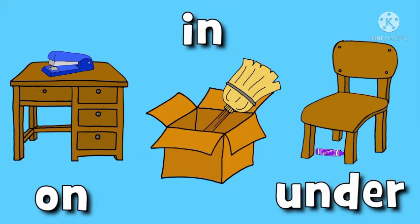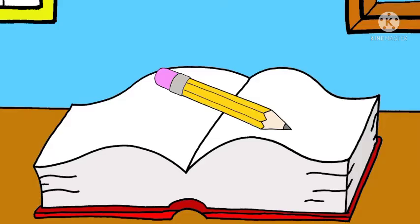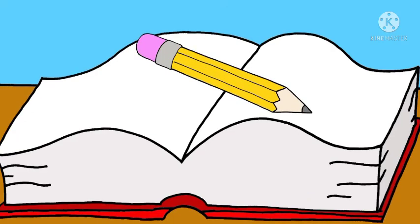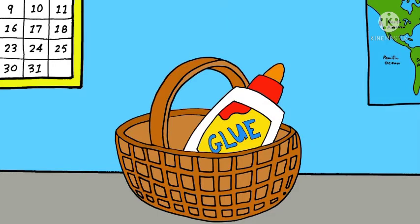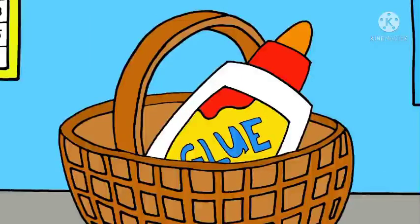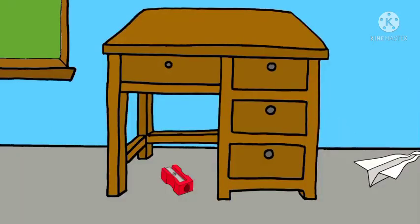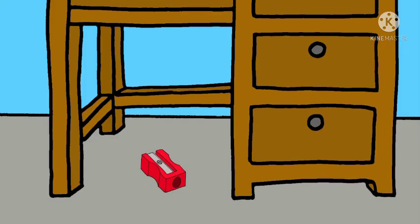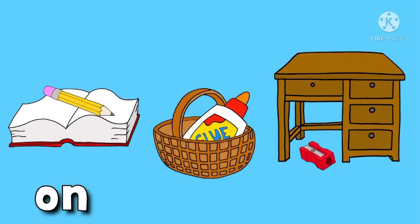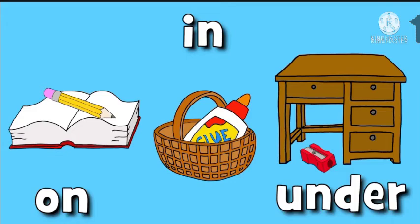I hope the concept is clear. Now see this. Where is the pencil? On the book. Where is the glue? In the basket. Where is the sharpener? Under the table. It is under the table. On, in, under.